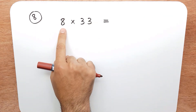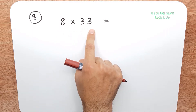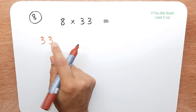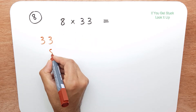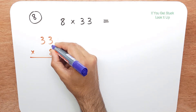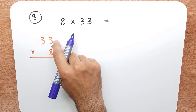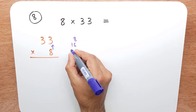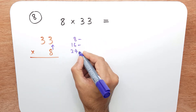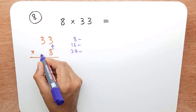Question 8 is eight times thirty-three, or eight multiplied by thirty-three. What I'm going to do is column multiplication. I'll put the big number at the top and eight here. I take the eight and multiply it by every digit above. So I'll do eight times three: eight, sixteen, twenty-four. So eight times three is twenty-four. I put the four in this column and carry the two over to the next column.